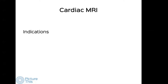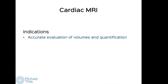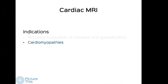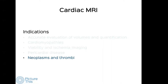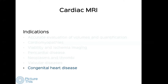To summarize the capabilities: cardiac MR can look at structure, systolic and diastolic function, flow, and different aspects to characterize the myocardium. In day-to-day practice, we use cardiac MR to accurately evaluate volumes and quantify function. Our largest bulk of indications are cardiomyopathies, followed by viability and ischemia imaging, then pericardial disease, neoplasms, and thrombi. Valvular imaging is rare because echo is so good. In congenital heart disease, we do only adult congenital, using CMR to answer specific questions typically related to the right heart.